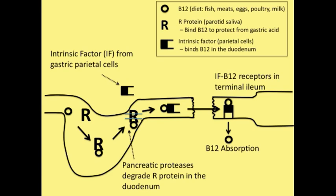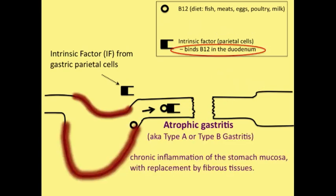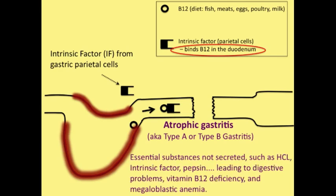Finally, we have a few more important disease mechanisms that can result in the decrease in vitamin B12 uptake. Here we have atrophic gastritis, types A and B. Remember that atrophic means that metaplasia has already begun to occur, where stomach mucosa is beginning to get replaced by fibrous tissue. Eventually, you're going to have essential substances not being secreted like HCL, intrinsic factor, pepsin, and so on.